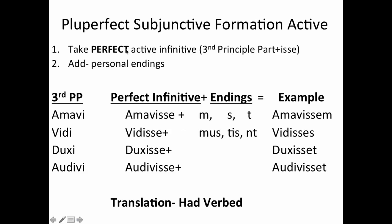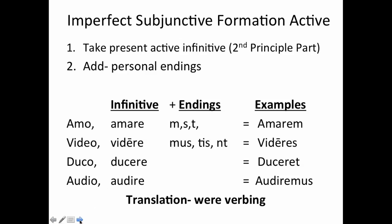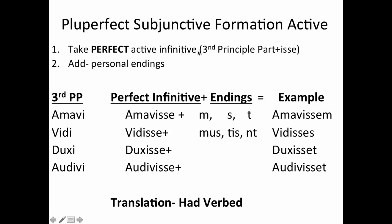The pluperfect, on the other hand — you're going to take the perfect active infinitive. So if in the imperfect you're taking the present active infinitive, for the pluperfect you take the perfect active infinitive: take the third principal part and add -isse. That's the perfect active infinitive. Then, just like with the imperfect subjunctive, you add the personal endings to that infinitive. So you have amavisse as your perfect infinitive, add -m, -s, -t, -mus, -tis, -nt, and you get amavissem, amavisses, amavisset, amavissemus, amavissetis, amavissent. What you should be looking for when identifying subjunctive verbs is that -isse added to the third principal part, then a personal ending. Much like any other pluperfect verb, you're going to translate this 'had verbed.'